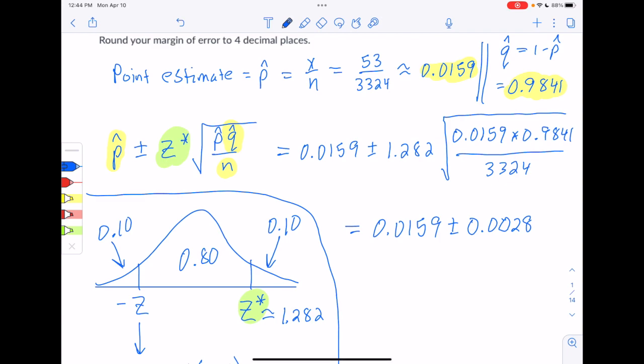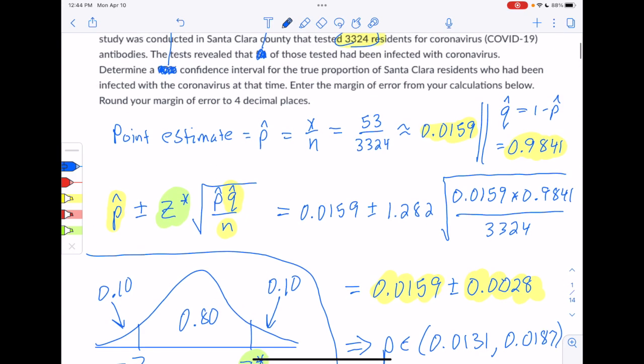And then doing the subtraction and addition will get us our confidence interval. So p is somewhere between, if we subtract, we get 0.0131. So that subtraction is this number minus that number, that's how we're getting the first one. And then if you do the addition instead of the subtraction, you get 0.0187. And that would be your confidence interval. That was the directions, to find the confidence interval.